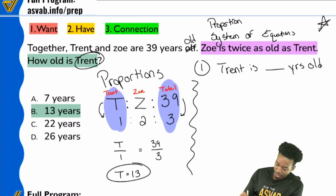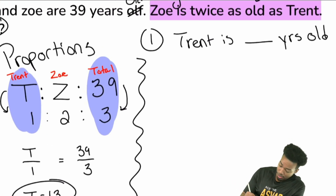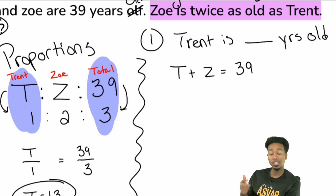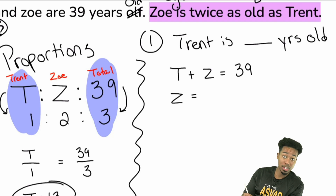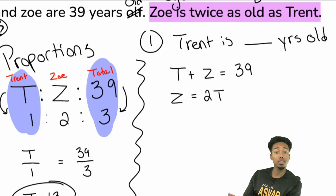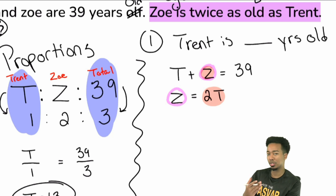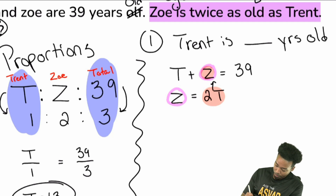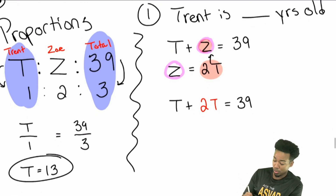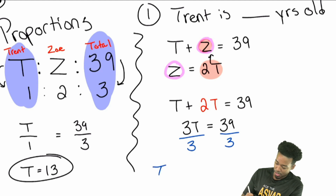The other way is with a system of equations. Together, Trent and Zoe are 39 years old, so T plus Z equals 39. Then, Zoe is twice as old as Trent, so Z equals 2T. Since these Zs are the same, I replace Z with 2T — that's substitution. You get T plus 2T equals 39, then 3T equals 39, then divide both sides by 3: T equals 13.